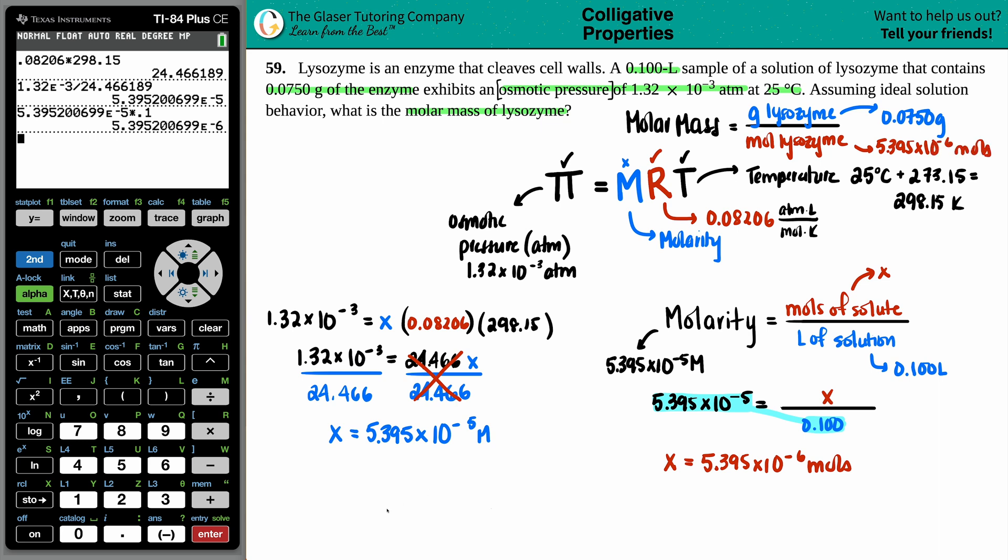And finally, we have the moles. 5.395 times 10 to the negative six. So let's find that molar mass. Molar mass equals something divided by the grams, which they told us in the beginning, 0.0750 divided by 5.395 times 10 to the negative six. Okay. So 0.075 divided by, I'm just going to take the full answer here just so that we get the most accurate answer at the end because you should only round at the end of your final answer. And there we go.